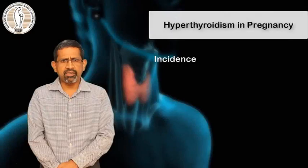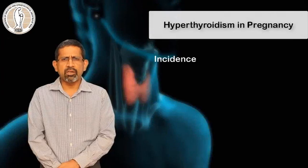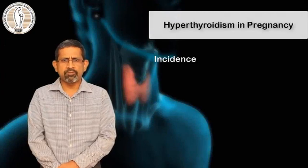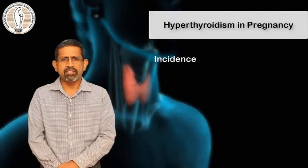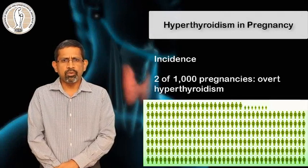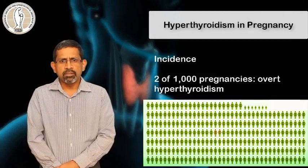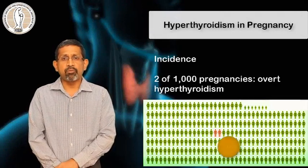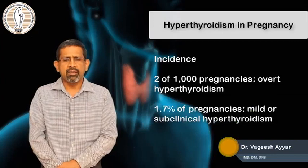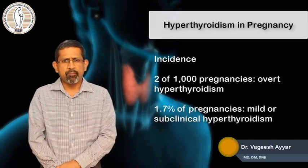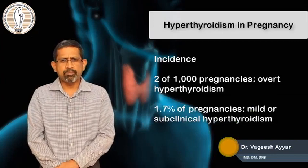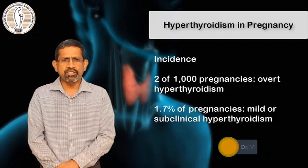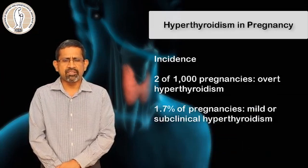Before proceeding, we should know the prevalence and incidence of hyperthyroidism in pregnancy. Two out of thousand pregnancies can have overt hyperthyroidism, and there can be mild or subclinical alteration in thyroid functions in up to 2% of pregnancies.